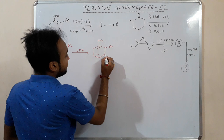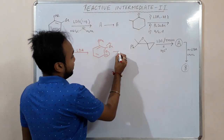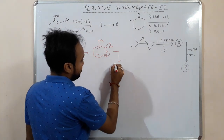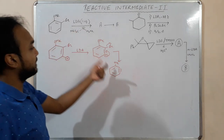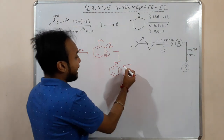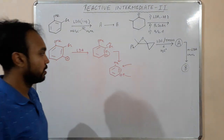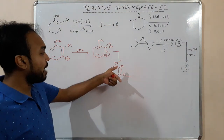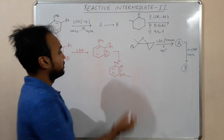Since bromine is a good leaving group, the lone pairs push and lead to formation of a benzyne intermediate. Now we have this nucleophile, and it can either attack at this position or at this position. If it attacks here, there will be a negative charge here; if it attacks there, the negative charge will be in that position.